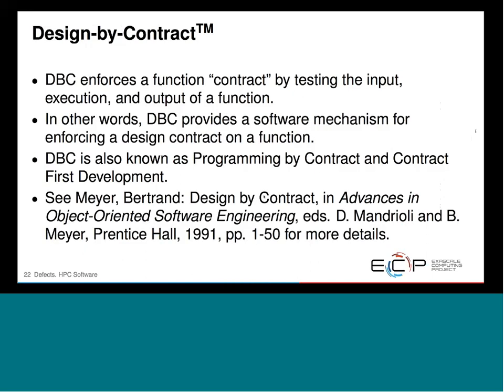Q&A: How do you deal with tiny numerical diffs after code changes — order of operations changes across compilers and configurations?